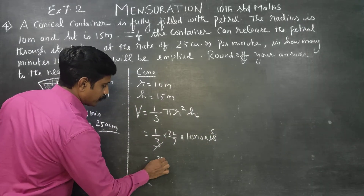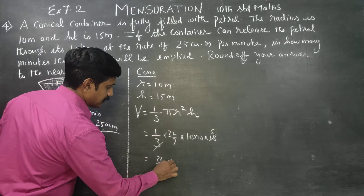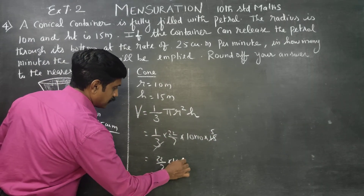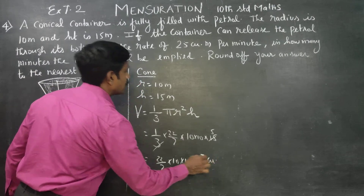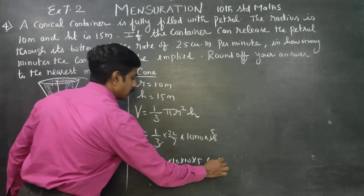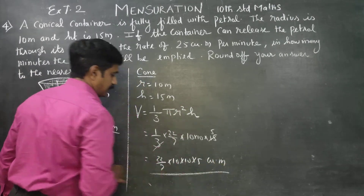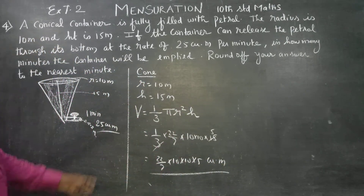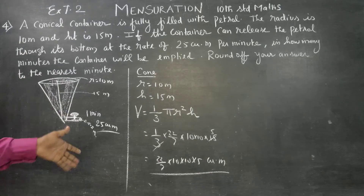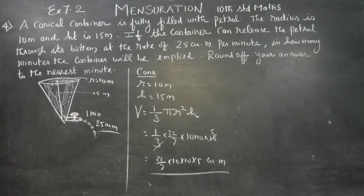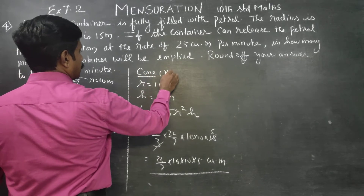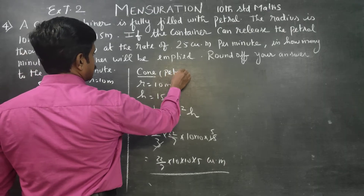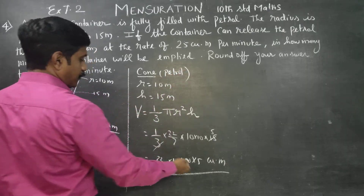Therefore, simplifying: 15 divided by 3 gives 5, so the answer will be (22/7) × 10 × 10 × 5 cubic meters. This is the volume of the cone, and also the volume of the petrol inside it.